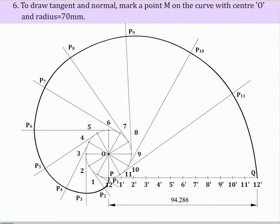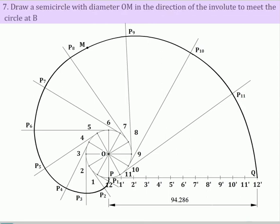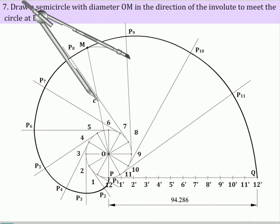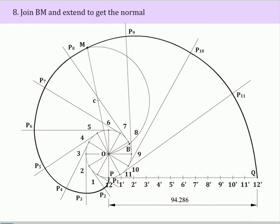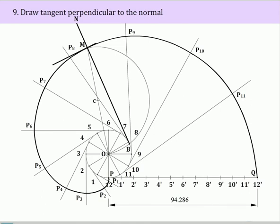To draw tangent normal, mark a point M on the curve with center O and radius equal to 70 millimeter. Draw a semicircle with diameter OM in the direction of the involute to meet the circle at B. Join BM and extend to get the normal. Draw tangent perpendicular to the normal.